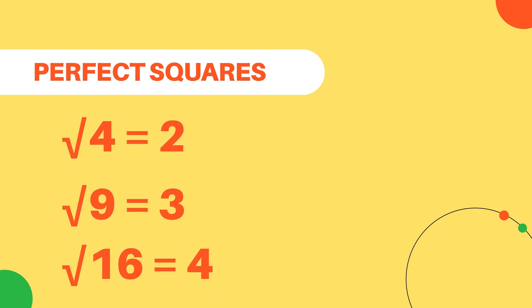Examples of perfect square numbers include 4, 9, 16, etc., because their square roots are whole numbers without any decimals.